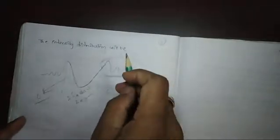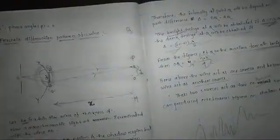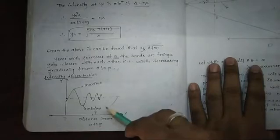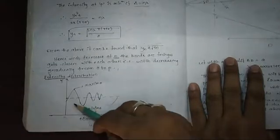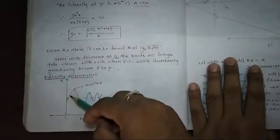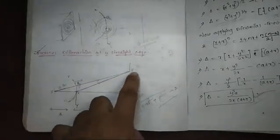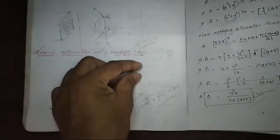This diffraction pattern observed at a thick wire is similar to the straight edge case. In the straight edge case, at the geometrical edge point O, the intensity is maximum or nearby O it is maximum, then it decreases with increasingly close fringes. So the thick wire produces a diffraction pattern at the illuminated edges equivalent to straight edge diffraction.